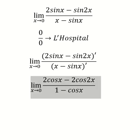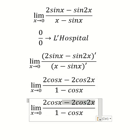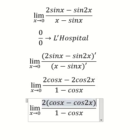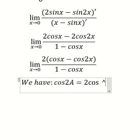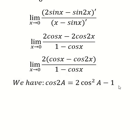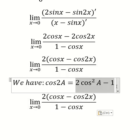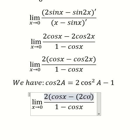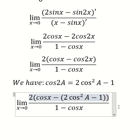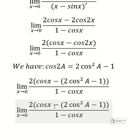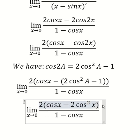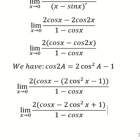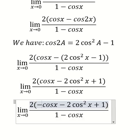Next, we put the number two outside so we can do factorization. We have the formula in here, and now we need to transform this one. The negative will change the sign of this one.